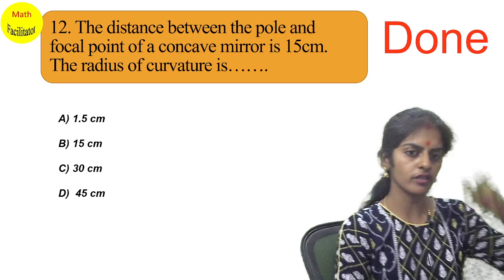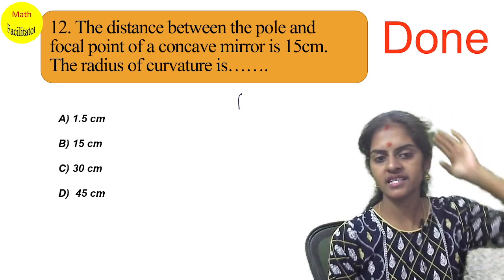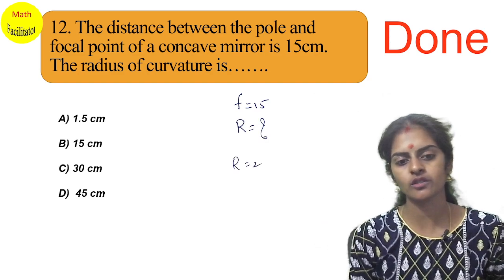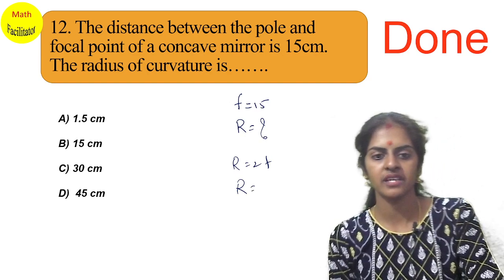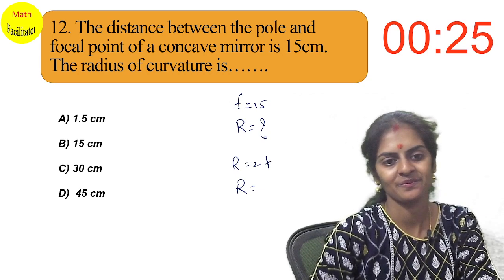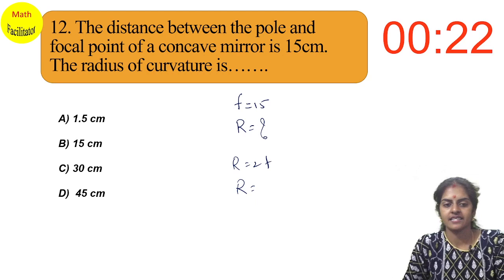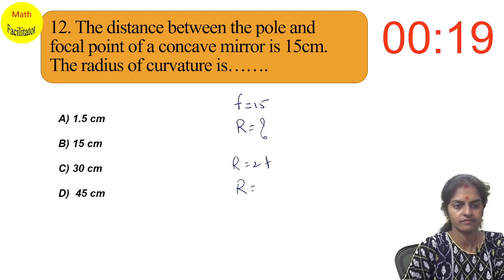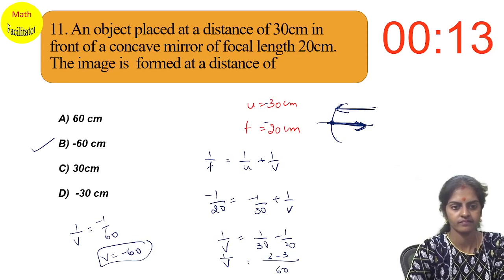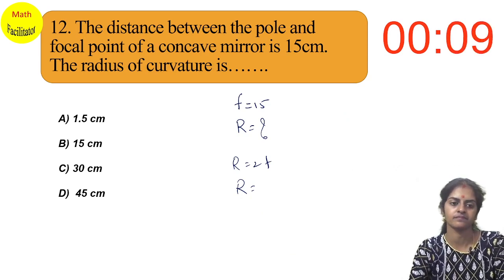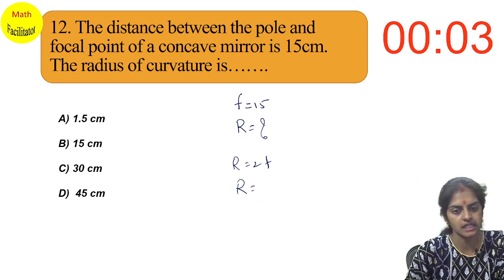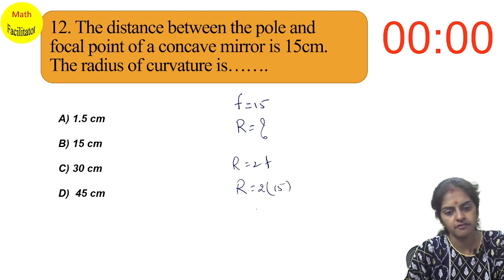The distance between the pole and the focal point of a concave mirror is 15 cm — what is the radius of curvature? Using R = 2f, we get R = 2 × 15 = 30 centimeters. The options are 1.5, 15, 30, and 45 centimeters — the correct answer is 30 centimeters.